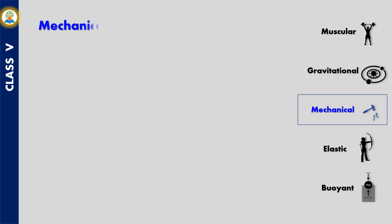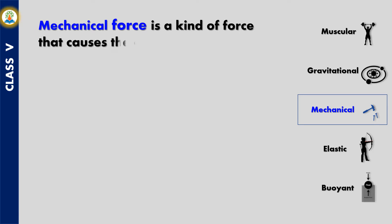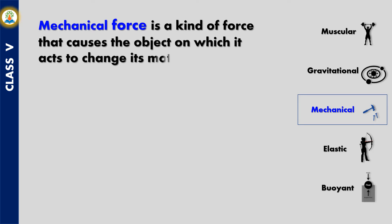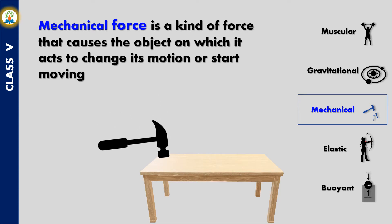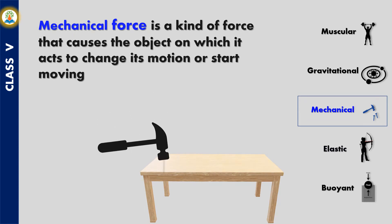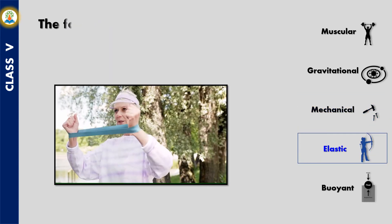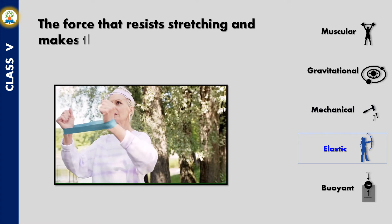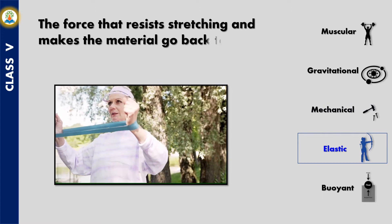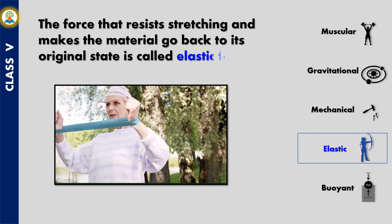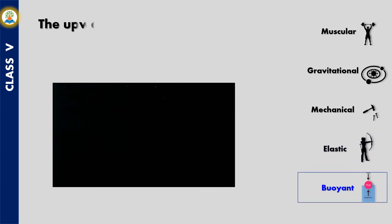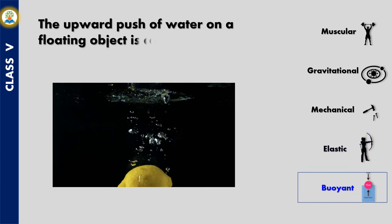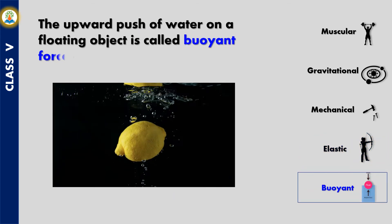Mechanical force is a kind of force that causes the object on which it acts to change its motion or start moving — hammering a nail uses mechanical force. The force that resists stretching and makes material go back to its original state is called elastic force. The upward push of water on a floating object is called buoyant force, or upthrust.